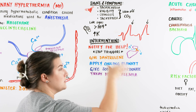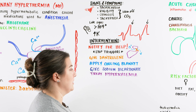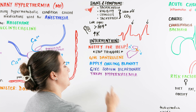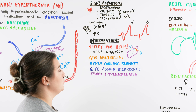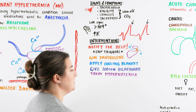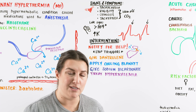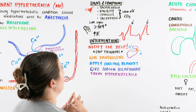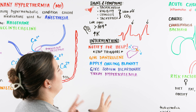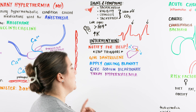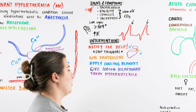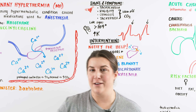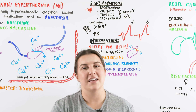We also need to apply a cooling blanket to bring down the temperature, give sodium bicarbonate to offset the metabolic acidosis, and treat the hyperkalemia to prevent dysrhythmias. Overall, malignant hyperthermia treatment is straightforward: give dantrolene, cool the patient, administer sodium bicarbonate, and treat the hyperkalemia as needed. That's the end of the malignant hyperthermia lecture — until next time!